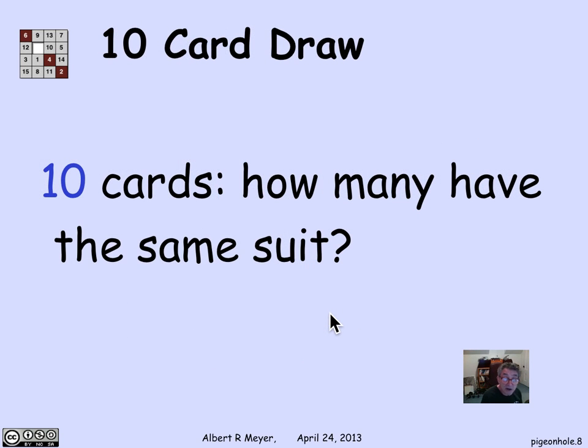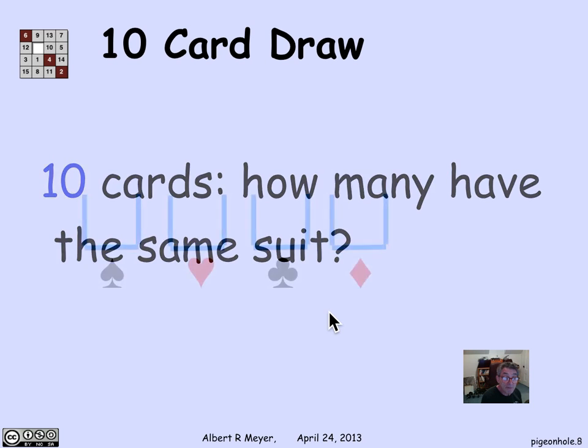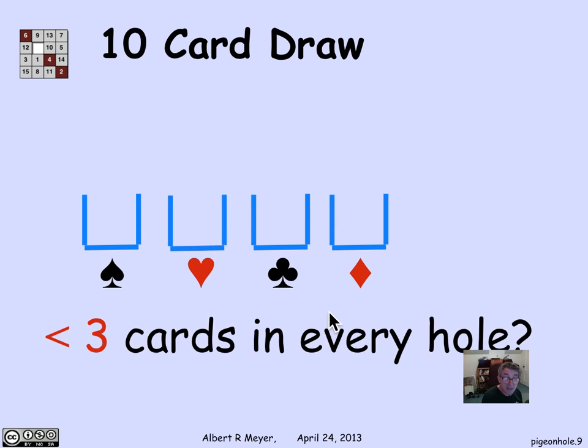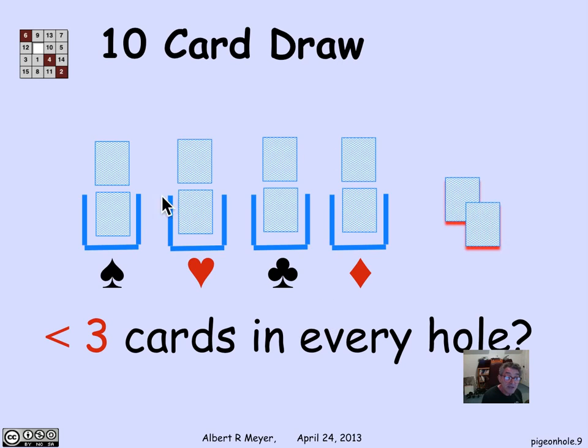A slight generalization. Suppose I have 10 cards. How many cards must I have of the same suit? What number of cards of the same suit am I guaranteed to have, no matter what the 10 cards are? Well, now, if I have the four slots and I'm trying to distribute 10 cards, is it possible that I had less than three cards in every hole? No, because if I have only two cards in every hole, then I have at most eight elements. And I got 10 to distribute in the four slots. I have to bunch them up and have at least three cards in the same suit.